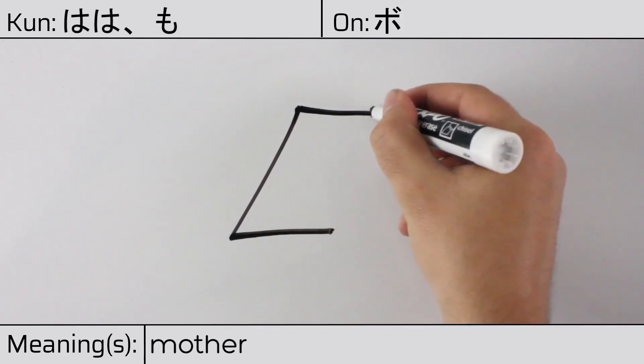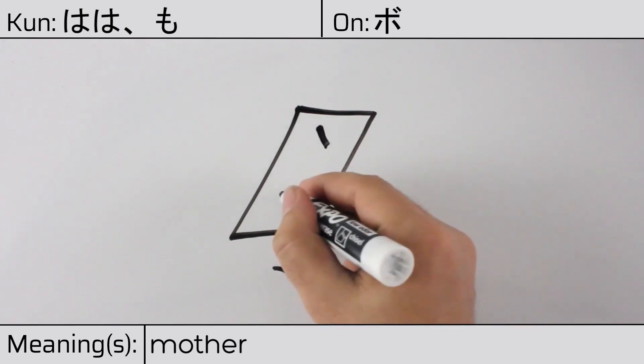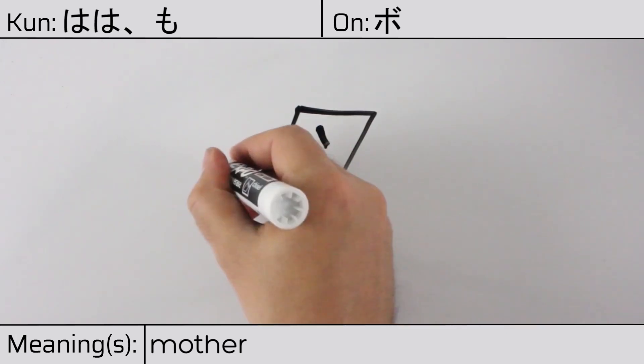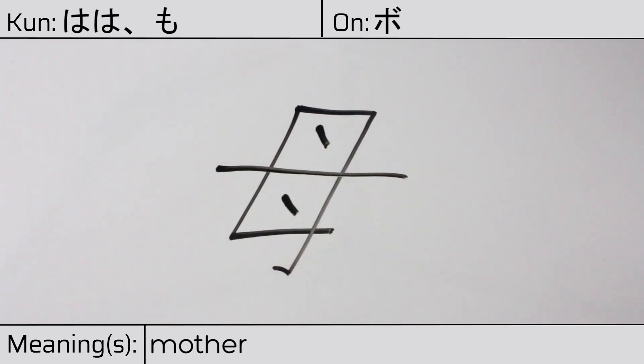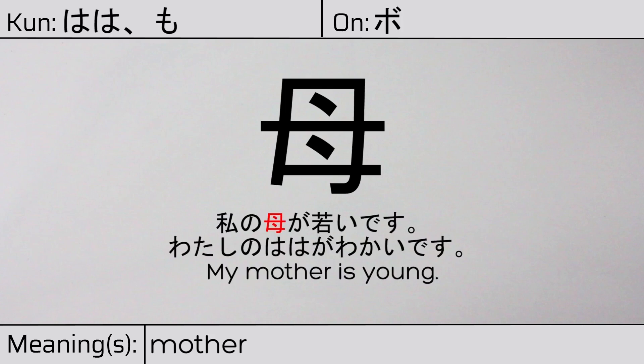You can remember this kanji by the fact that it is drawn to include two breasts, where each of the dots indicate nipples, which therefore indicates the meaning of this character, which is mother. Our example sentence is: Watashi no ha-ha ga wakai desu — My mother is young.